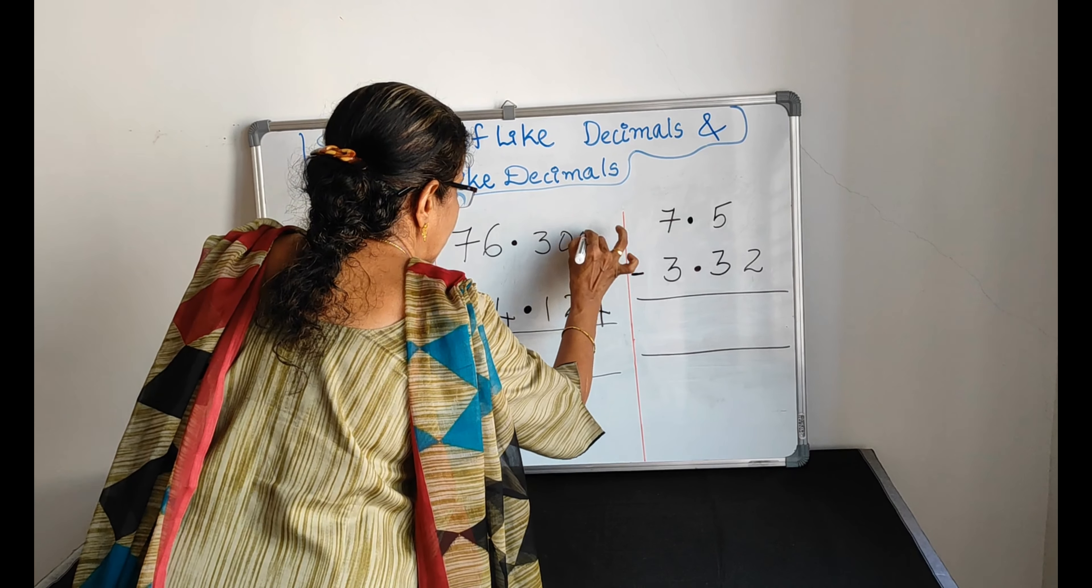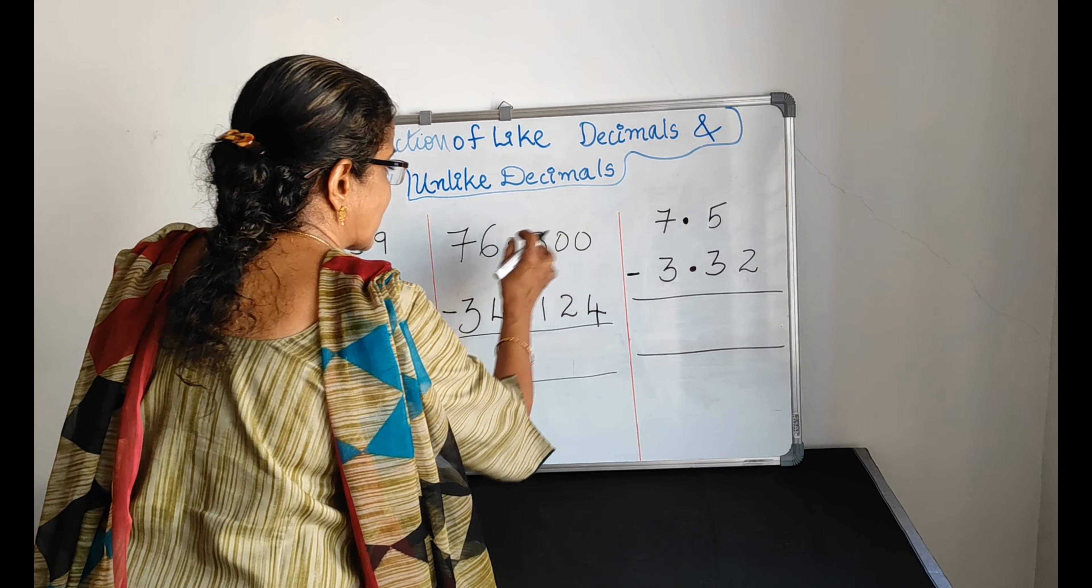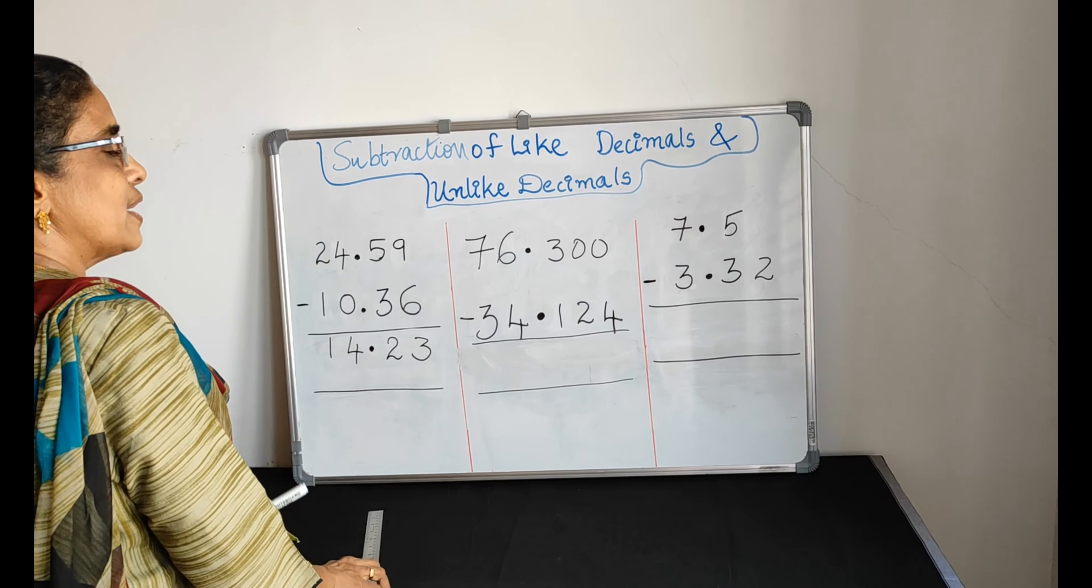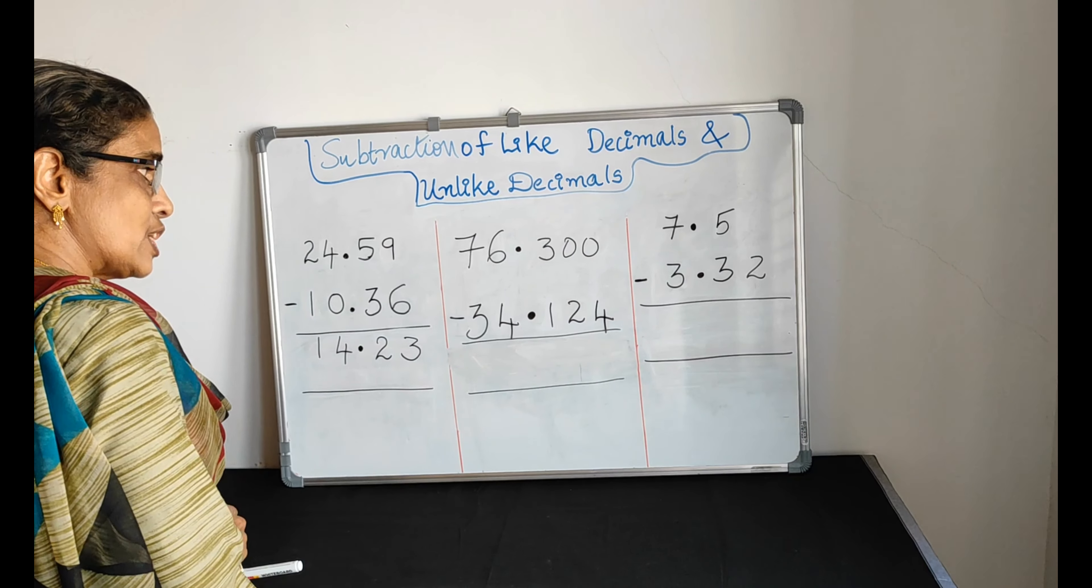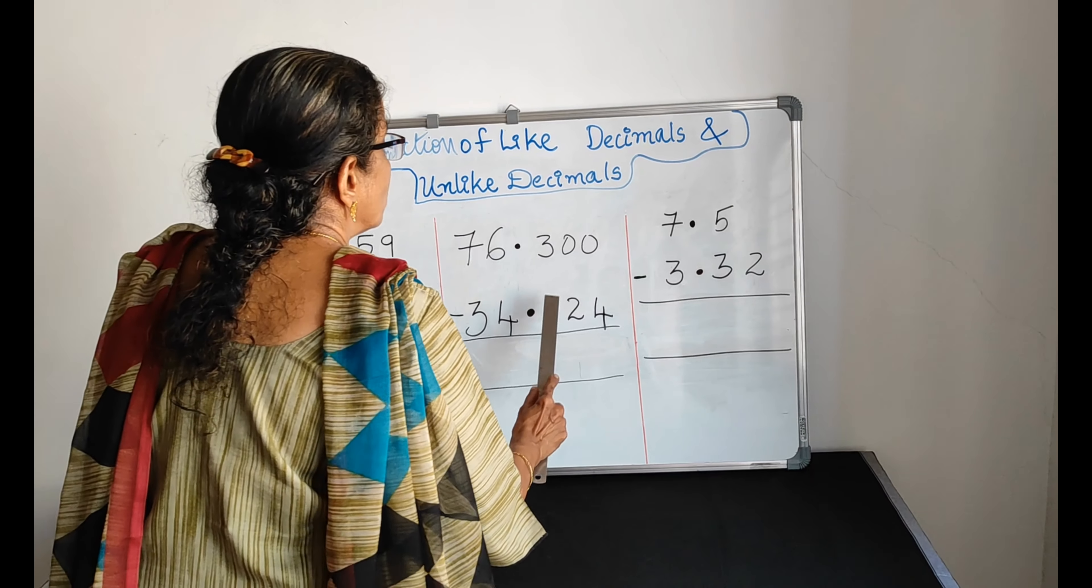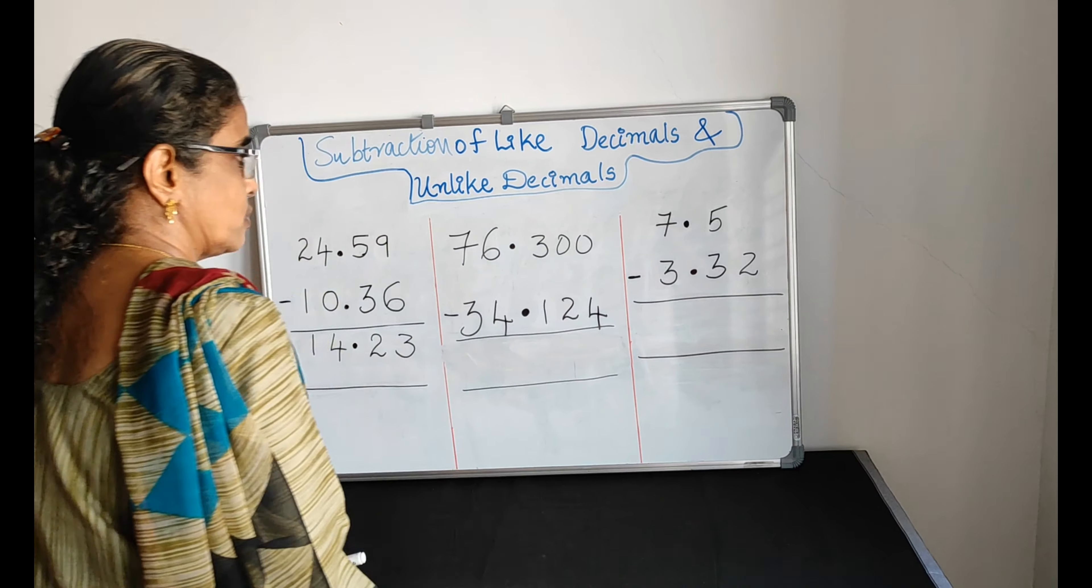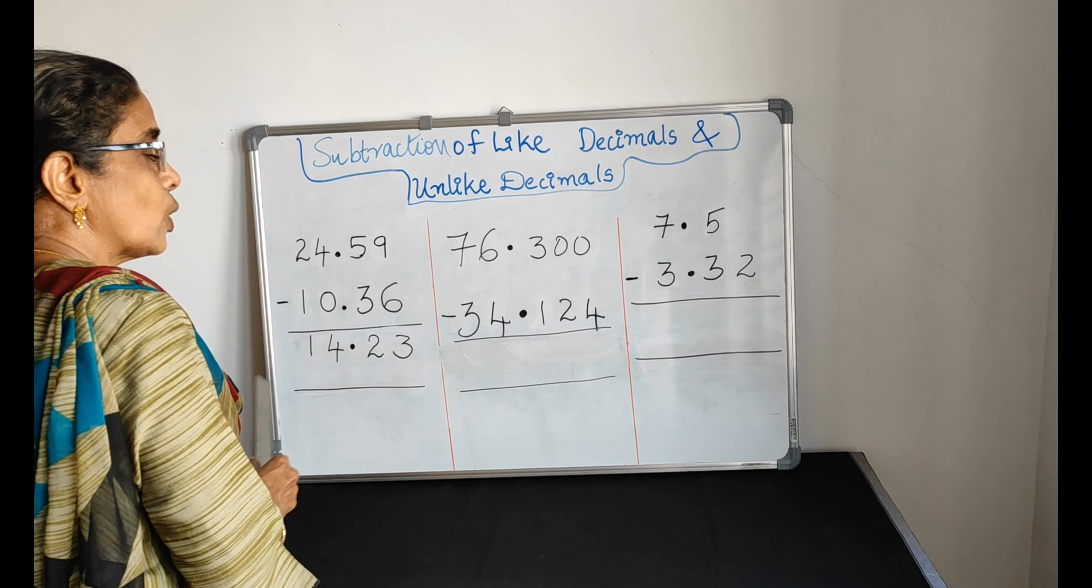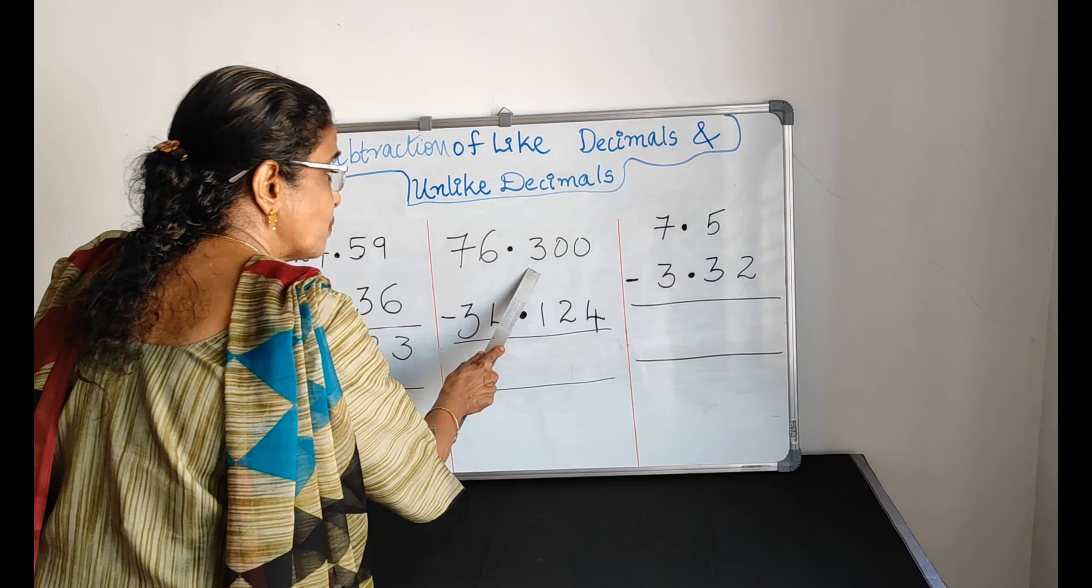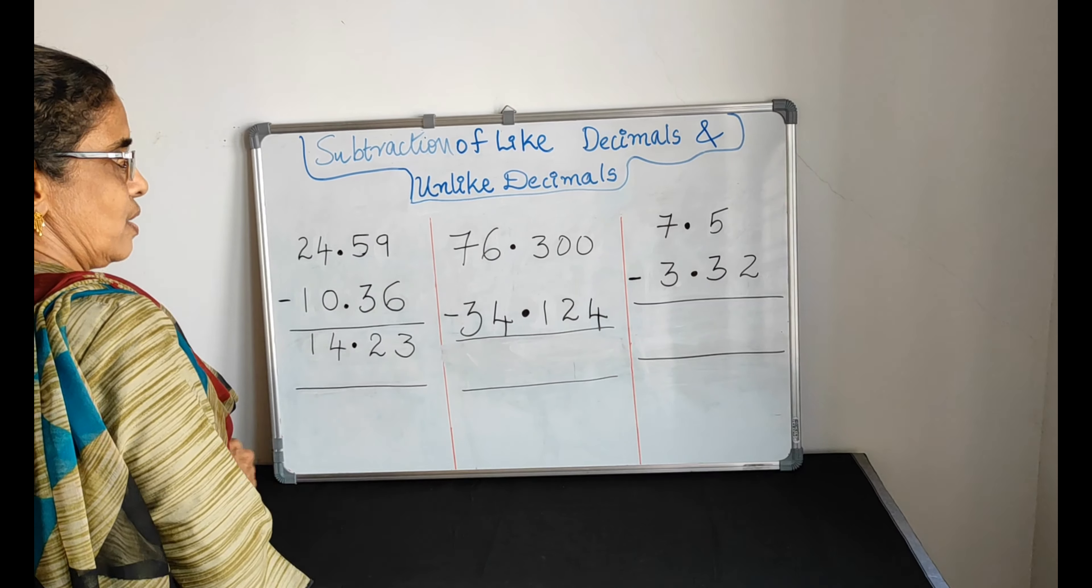We have second sum. 76.3 minus 34.124. Here we have only 1 digit after the decimal dot. Here we have 3 digits after the decimal dot. So they are unlike.